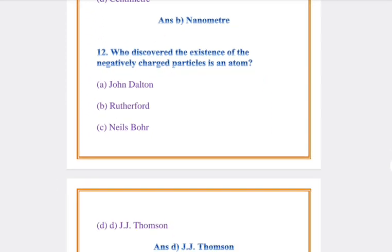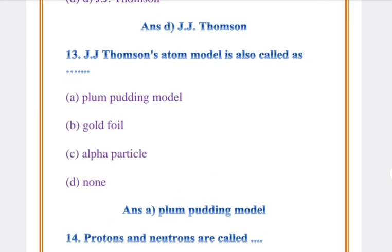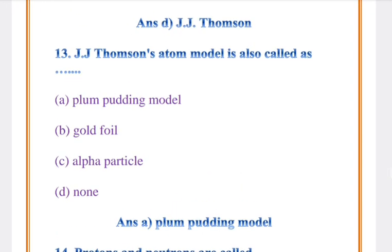Question number 12: Who discovered the existence of the negatively charged particles in an atom? Answer: D, J.J. Thomson. Question number 13: J.J. Thomson atom model is also called as? Answer: A, Plum pudding model.